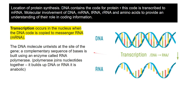Looking at protein synthesis: proteins are made from amino acids. The amino acids form chains called peptides. Longer chains form polypeptides. These polypeptides must be folded into the final shape of a protein.